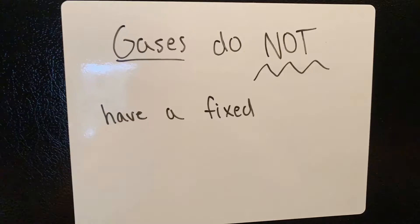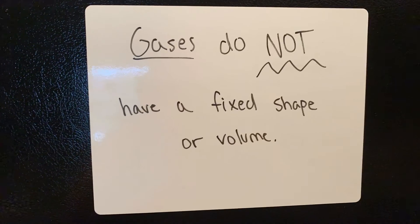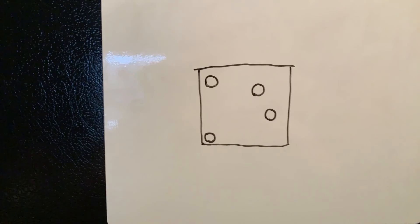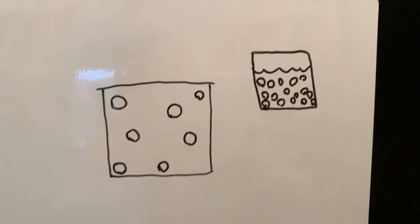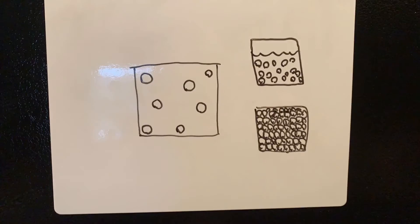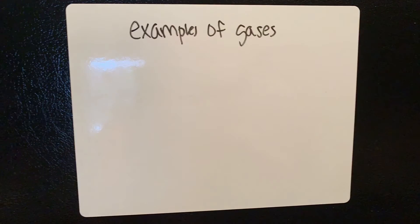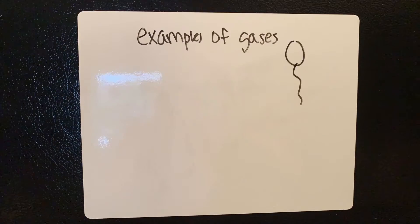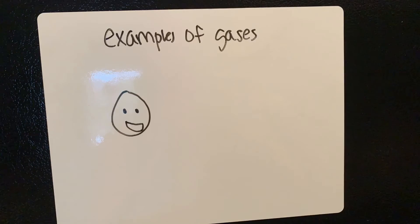Gases do not have a fixed shape or volume. Gas particles are more spread out and they move much faster than liquid particles and solid particles. Some examples of gases include the helium inside of a balloon and the air that you breathe.